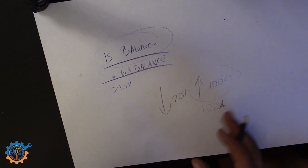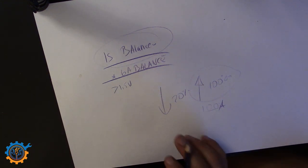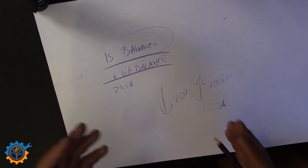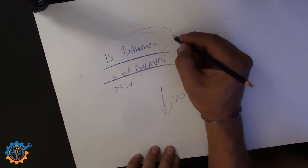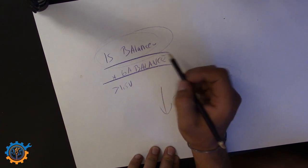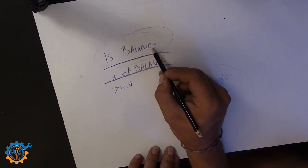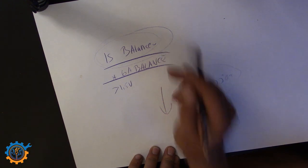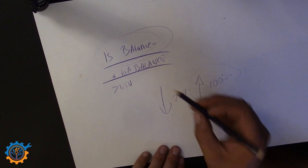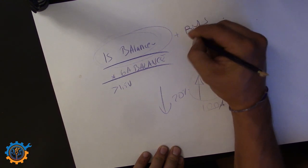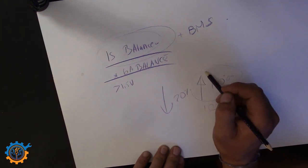A BMS — even the cheap Chinese ones — has disconnect protection, overcurrent protection in terms of voltage, current, and temperature, and will disconnect either the charging or discharging part. For instance, the Batrium that many people use including me — yes it's expensive — does so much more because it has active monitoring, active alerting, and will take action on problems.